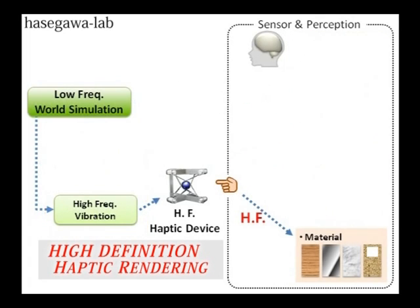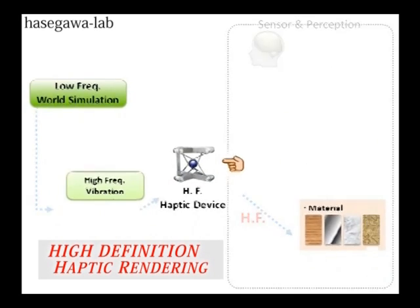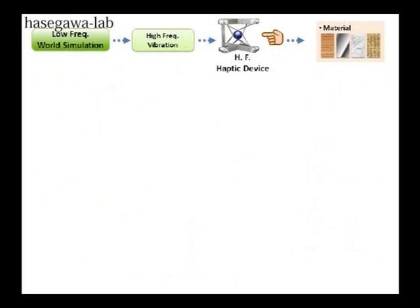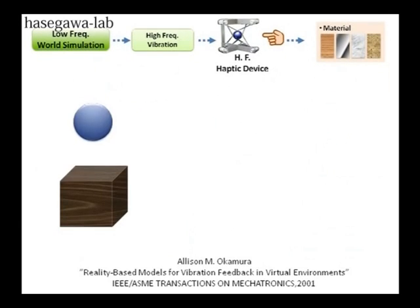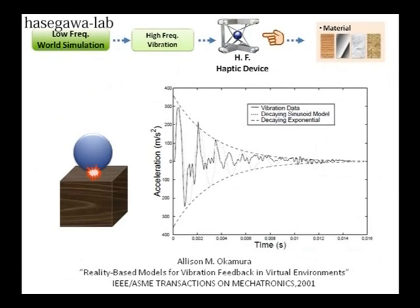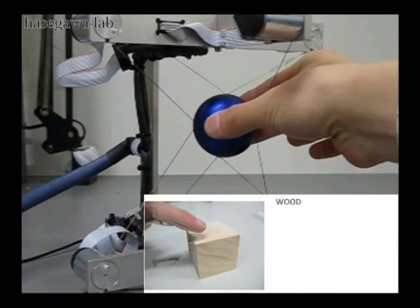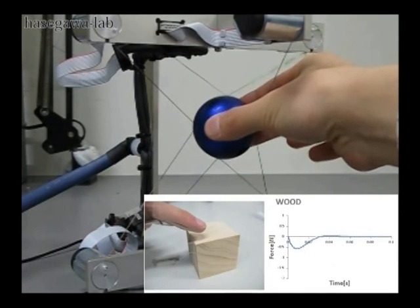Perception of materials from force vibrations also requires high frequency. Okamura et al. reported that even vibration generated from a simple frequency and envelope model can generate perception of materials. We extend Okamura's model and integrate it into the haptic rendering.